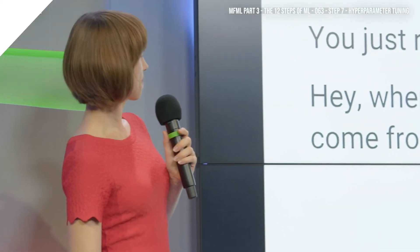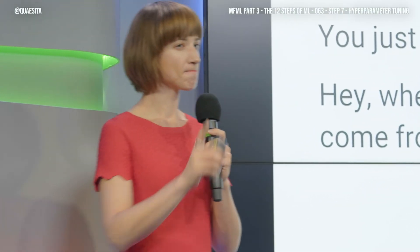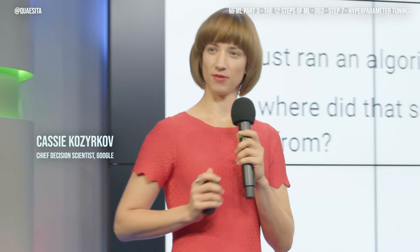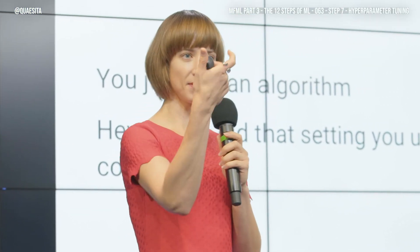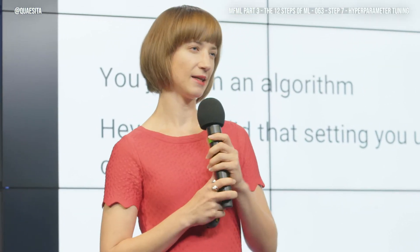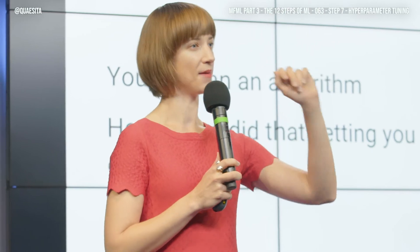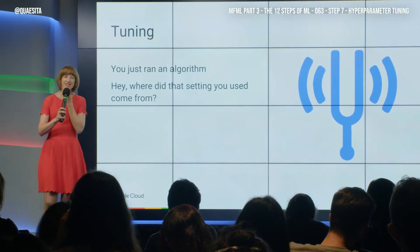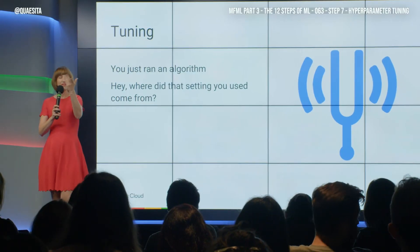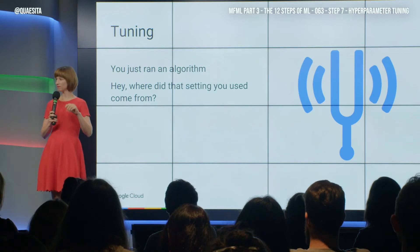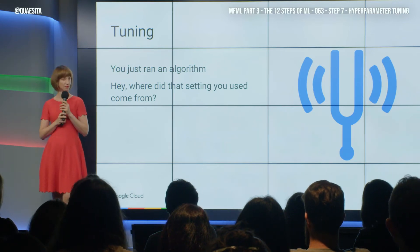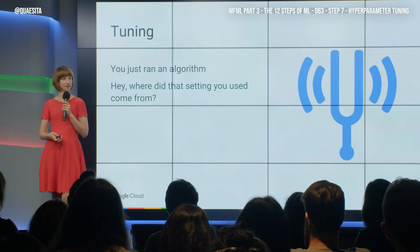Tuning. You just ran an algorithm, and somewhere in that code there was some place we had to put, like, a regularization parameter, learning rate, whatever. And you're like, look at this thing — what even is that? Point one. I'll just put point one. Where did that point one come from? How did you pick that number that went into the settings?